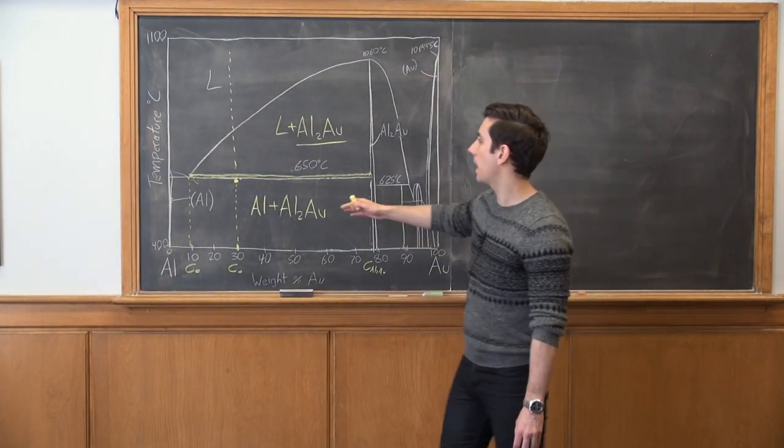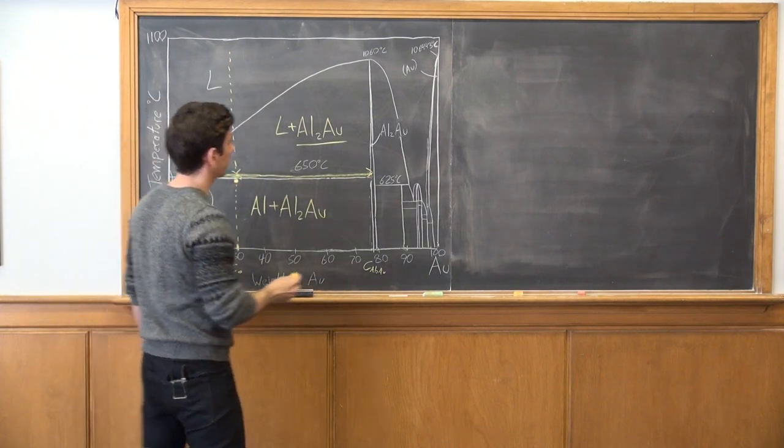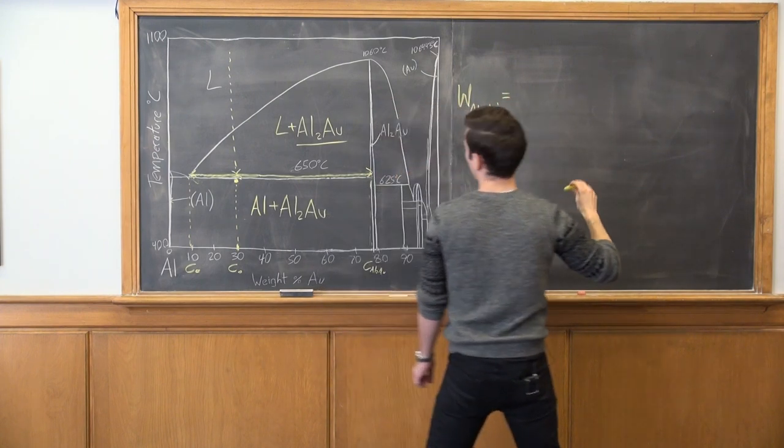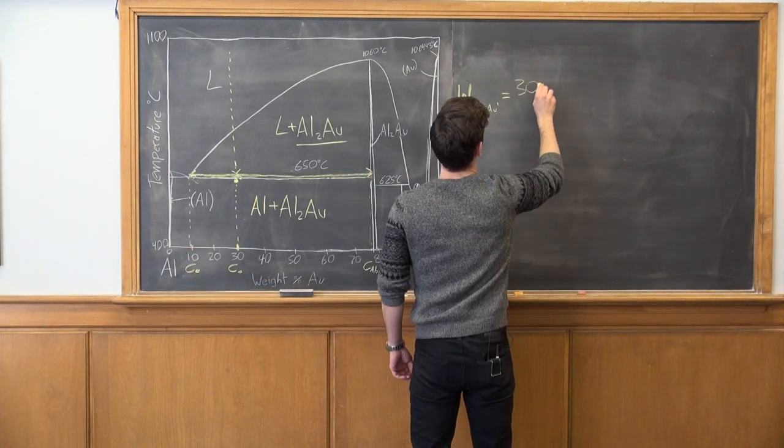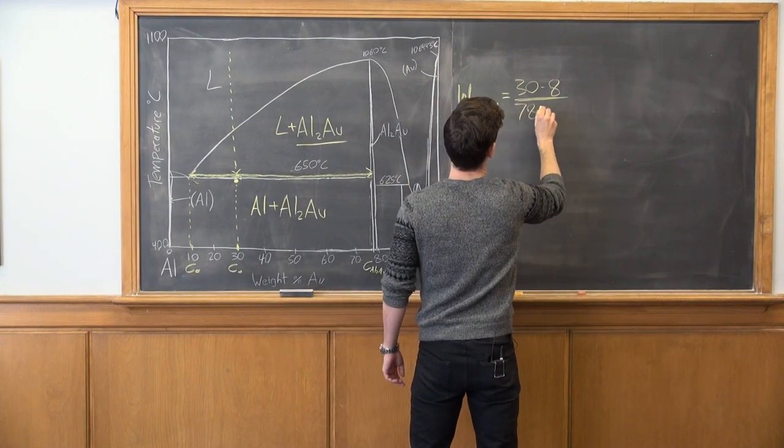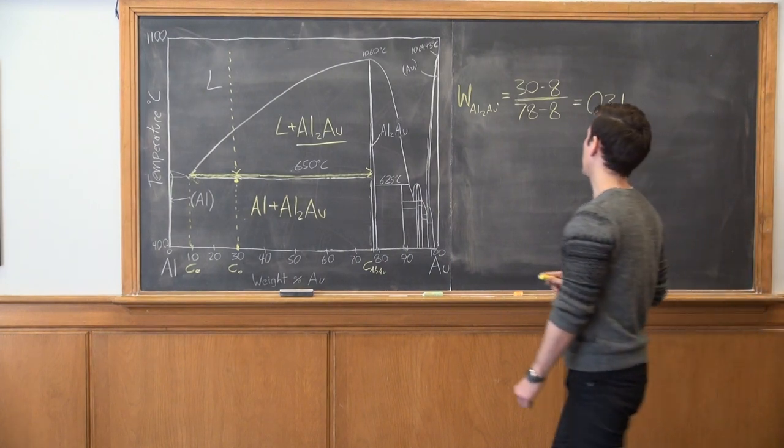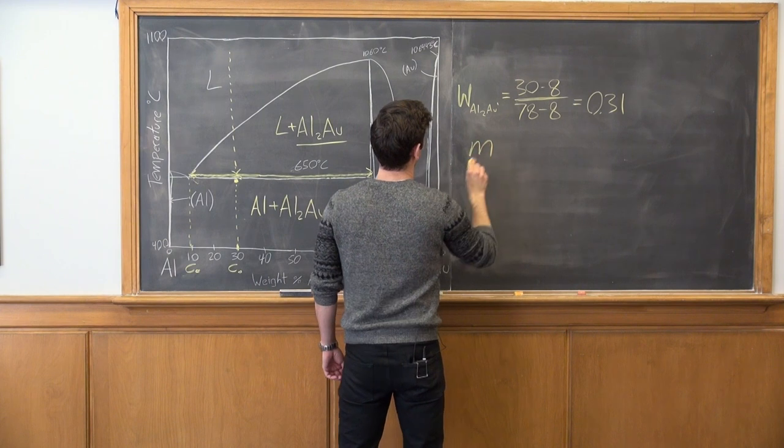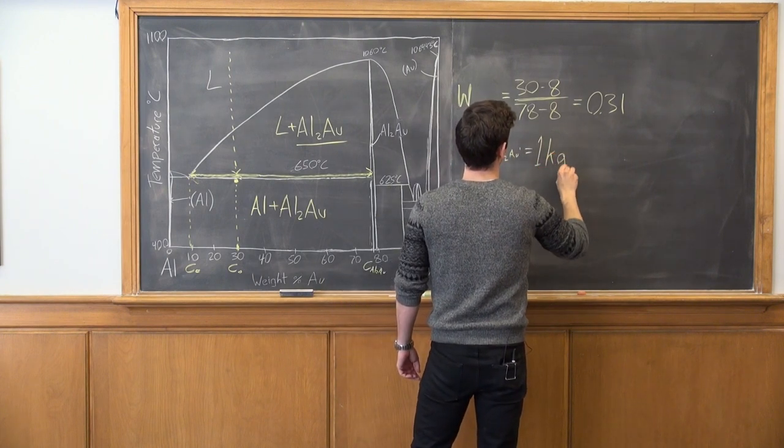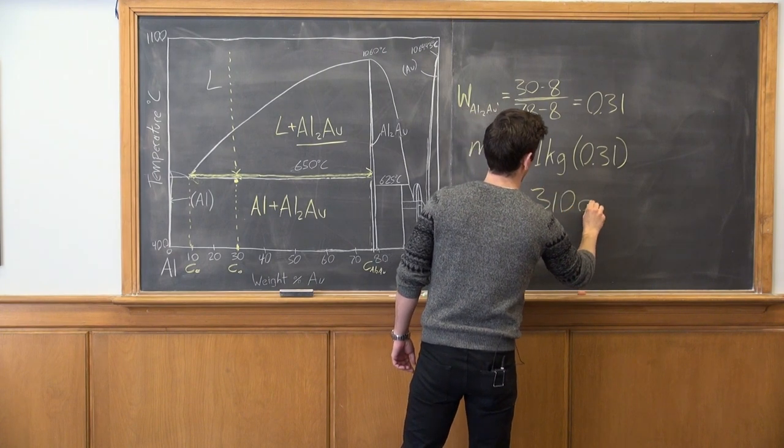And that's roughly 78% on the diagram. So if we want to know the fractional amount of aluminum to gold prime, we just apply the lever rule in this case. So we look at these two sections here, and then we know the fractional amount of aluminum to gold prime is going to be equal to 30 minus 8 divided by 78 minus 8. And that is 0.31. Now the question asks for the mass. So our total mass is 1 kilogram. So our mass of primary aluminum to gold is going to be equal to 1 kilogram times the fractional amount. And that's 310 grams.